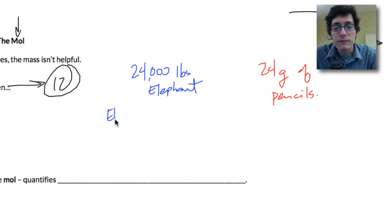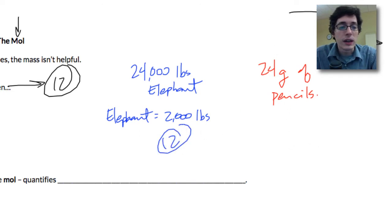Well this is kind of where we get stuck. So if each elephant weighs 2,000 pounds, that means I have a dozen elephants. On the other hand, if I have 24 grams of pencils and each pencil is equal to 2 grams, I've got the same number of pencils as elephants, it's the same. I've got 12 of each.